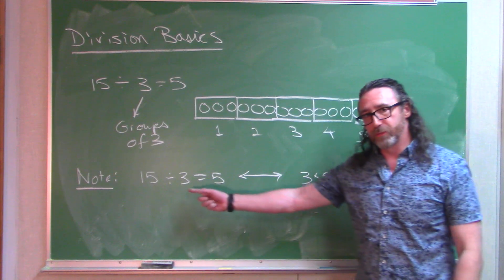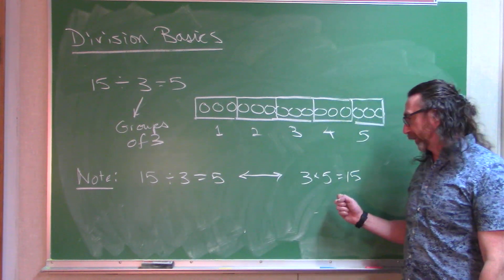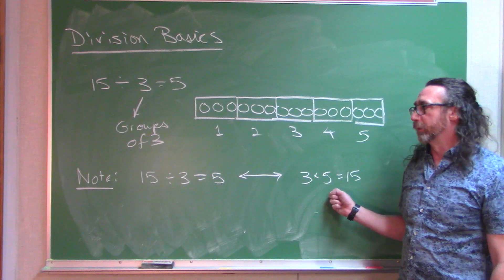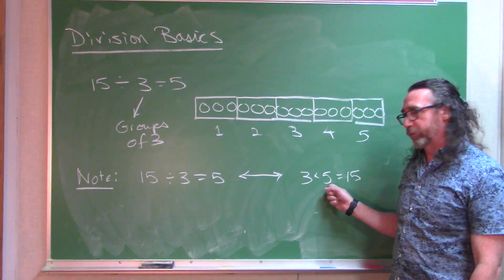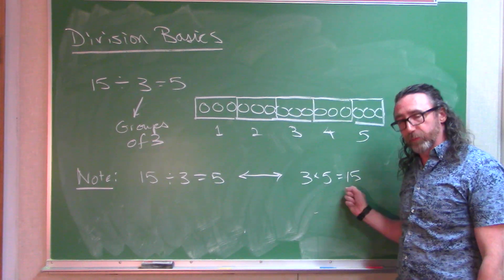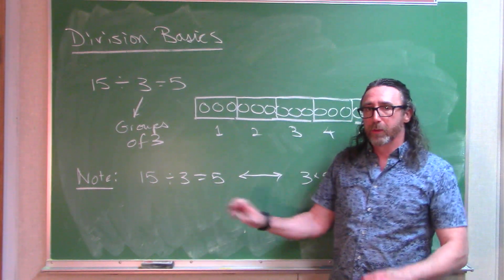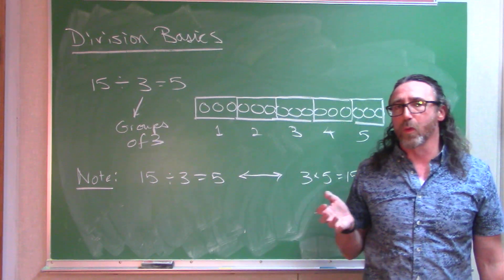And note the equivalence between our division facts and our multiplication facts. Every division fact is equivalent to a multiplication fact. 3 times 5 is 15. So 5 groups of 3 give us 15. How many groups of 3 do you have in 15? 5. It's like 2 sides of the same coin.